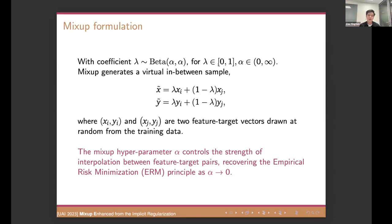Now let's look at the formal definition. Assume the coefficient lambda is sample from the beta distribution with hyperparameter alpha. Mixup generates a virtual in-between sample. The synthesized input x tilde is actually the linear combination of two random samples drawn from the training dataset. So here Y tilde is the mixup label. So if the alpha goes to zero, which means we do not use any data augmentation, it will recover the empirical risk minimization, which we so-called ERM, right?